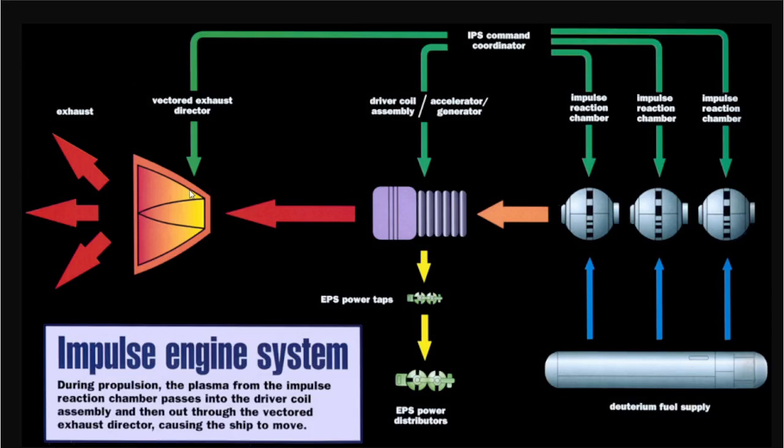So the key to this impulse engine was not just the fusion reaction producing energy, but also the magic secret sauce—this driver coil assembly that produces a subspace field. The subspace field somehow reduces the mass of the ship so it can achieve very high speeds, almost reaching the speed of light. The driver coil field enveloped the starship in a low-energy subspace field intended to lighten the relative mass of the starship.